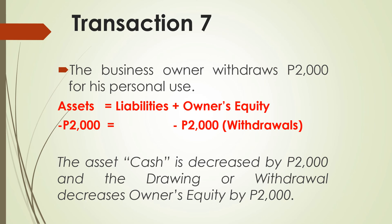Transaction number seven: the business owner withdraws $2,000 for personal use. The asset cash is decreased by $2,000 because of the withdrawal. Drawing or withdrawal decreases owner's equity by $2,000 as well, since withdrawals are a component of owner's equity. The accounting equation is balanced: $2,000 equals $2,000.